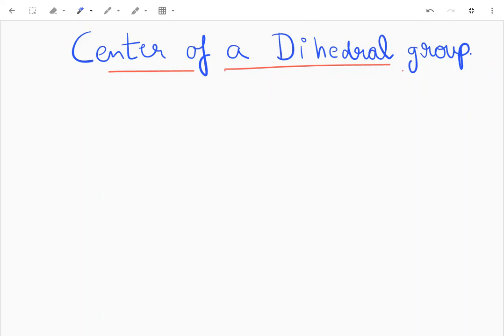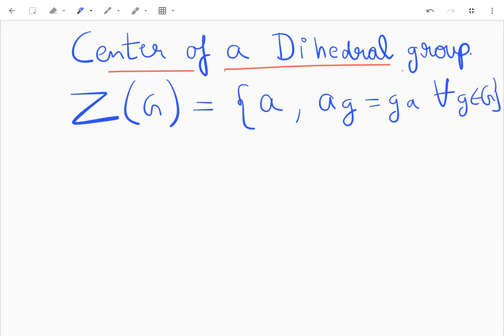Okay, so in this video we will try and find the center of a dihedral group. The center of a group, represented by Z(G), is actually the group of elements a such that ag equals ga for all g belonging to the group.